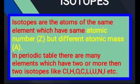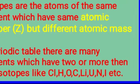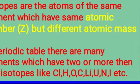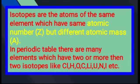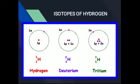Chlorine کے دو isotopes naturally exist کرتے ہیں، hydrogen کے تین isotopes ہوتے ہیں، oxygen کے تین، carbon کے تین، lithium کے، uranium کے تین isotopes ہوتے ہیں، nitrogen کے دو اور iodine کے بھی دو reported ہیں۔ اب ہم example سے سمجھتے ہیں۔